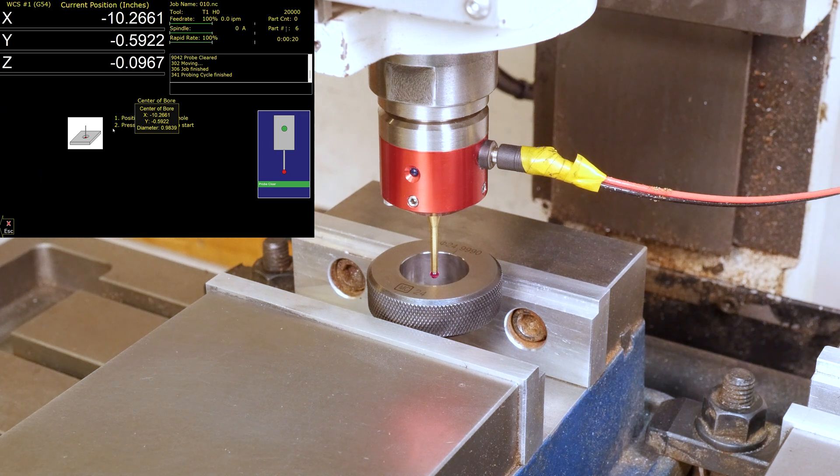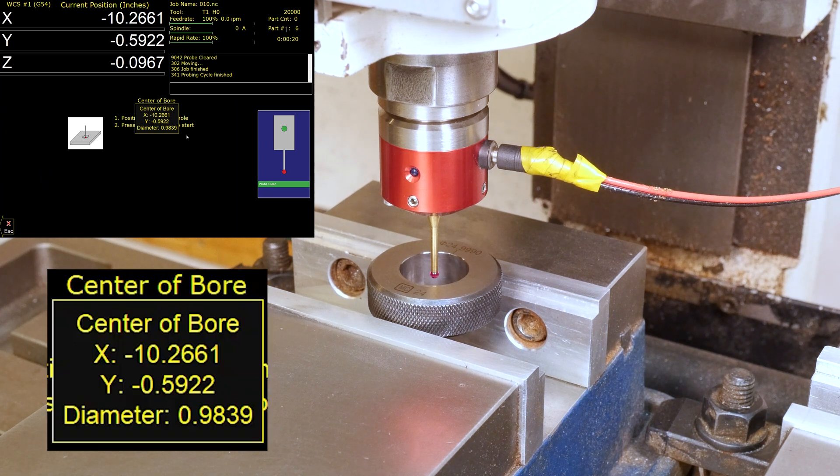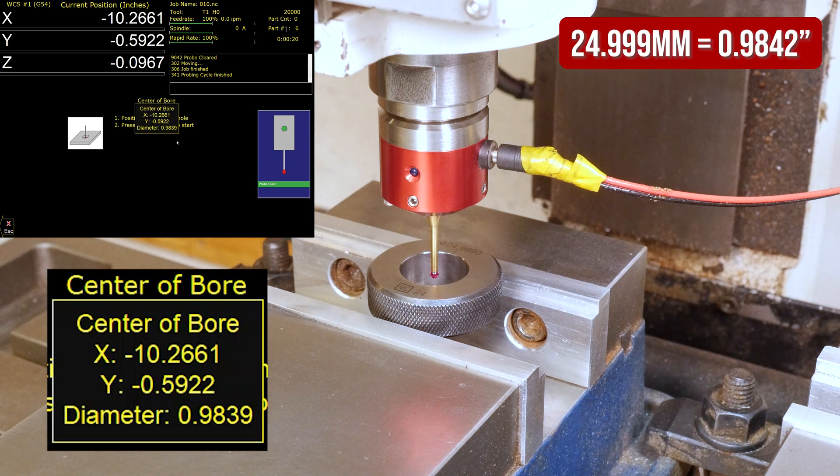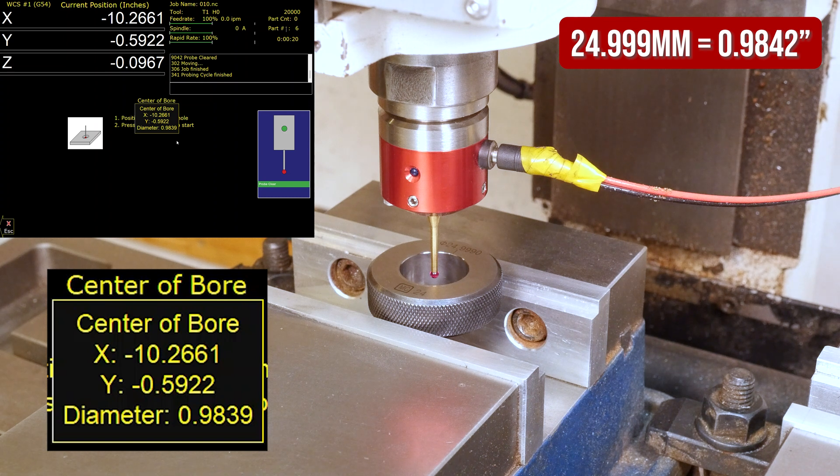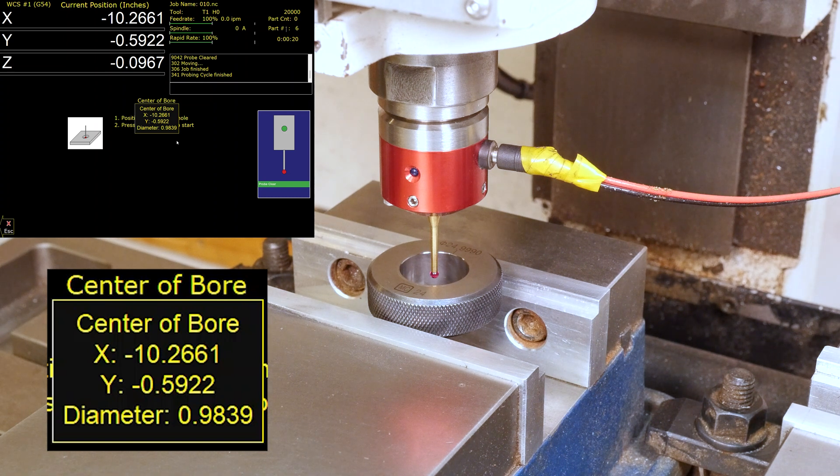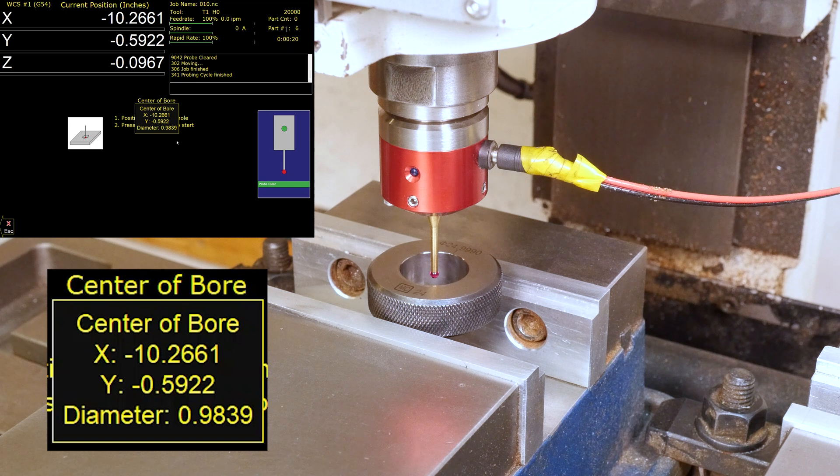So here we can see where the center of the bore is but more importantly what the diameter is. We got 0.9839 inches and we know that our ring gauge diameter is 0.9842 so that's pretty damn good that puts us three tenths off the money. And my machine is only capable in moving in thousandths of an inch because I'm not using servo motors I'm using closed loop steppers so I don't even have three tenths of resolution so we are well within the capability of the machine.